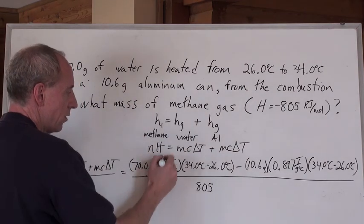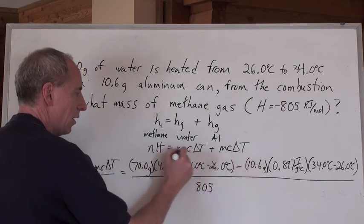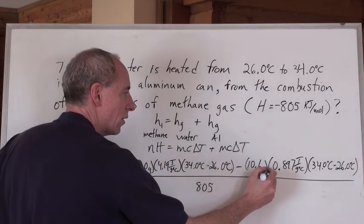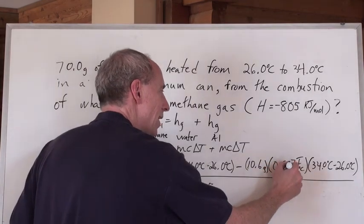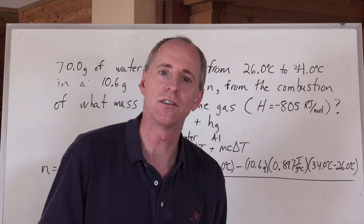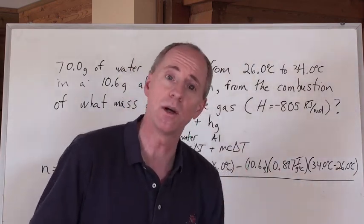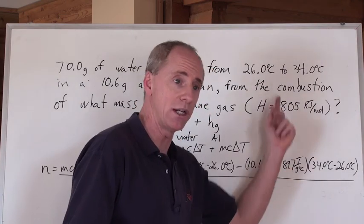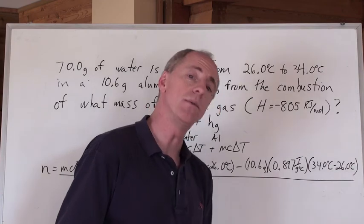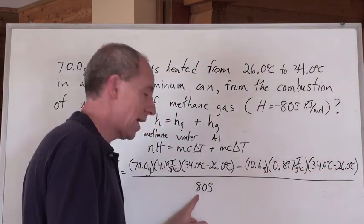Here's what they lose track of. 70 grams of water times 4.19 times the temperature change of the water. That's the mc delta t of the water. Here's the mc delta t of the aluminum: 10.6 grams times 0.897. Where do I get that heat capacity for aluminum? Just look it up. There's going to be lots of charts and information available, and you'll never be left hanging on this one. That would have to be given to you in a question or in a data booklet. And there's the temperature change of the aluminum, which is the same as the temperature change of the water. All divided by that big H.